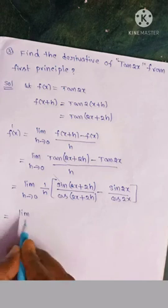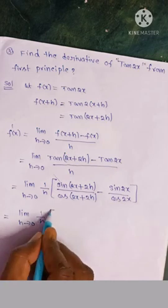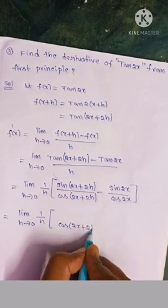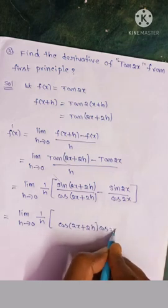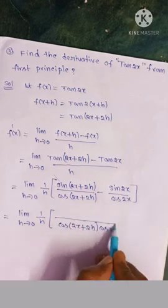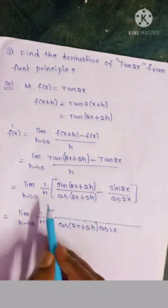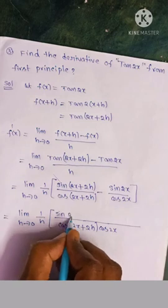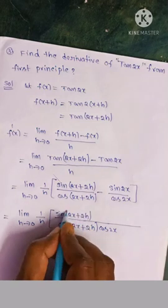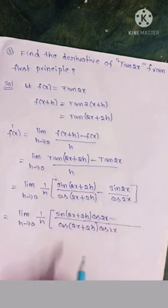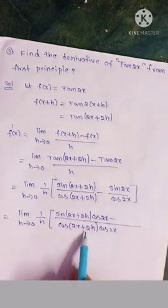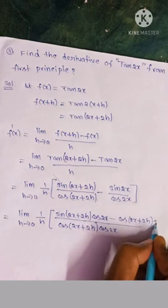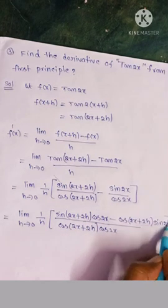So, limit h tends to 0, 1 by h into — here the LCM is cos 2x plus 2h into cos 2x. We use cos 2x into sin(2x plus 2h) minus cos(2x plus 2h) into sin 2x, whole by cos(2x plus 2h) into cos 2x.